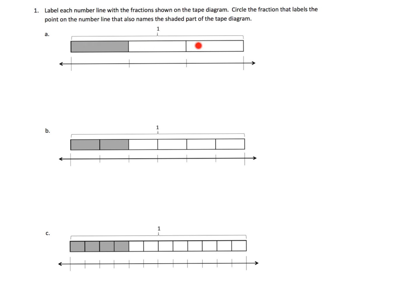What's going on here is we have three identical lengths. You'll notice this one is the same length as this and the same length as this. The difference is they're partitioned in different ways. We're going to label our fractions and our number line. This first one has been cut into three pieces, so this is zero-thirds, one-third, two-thirds, and three-thirds.